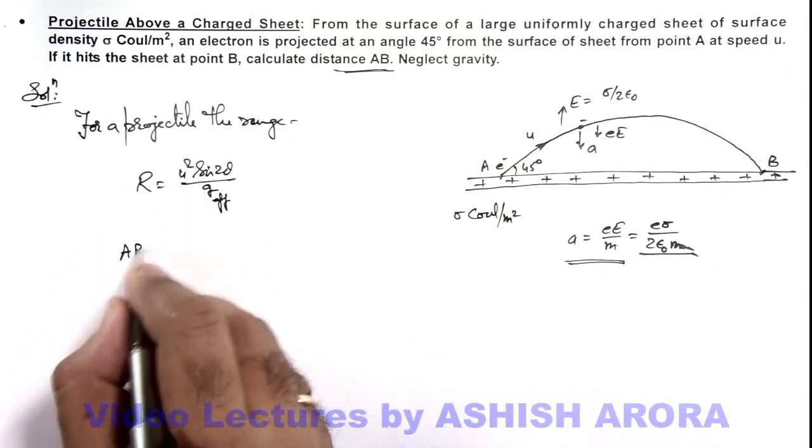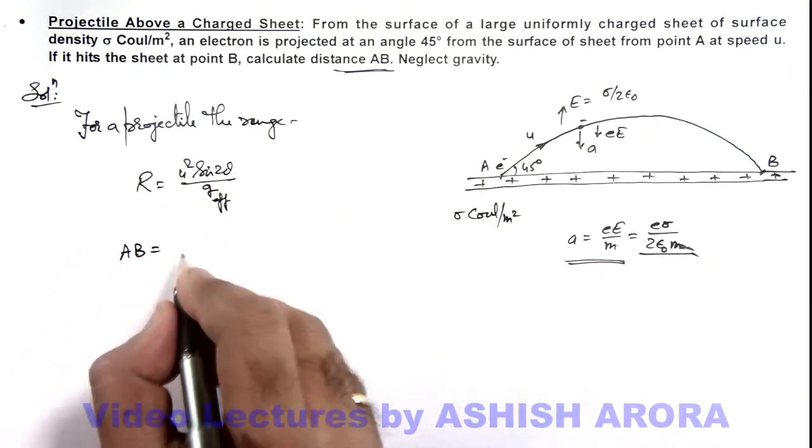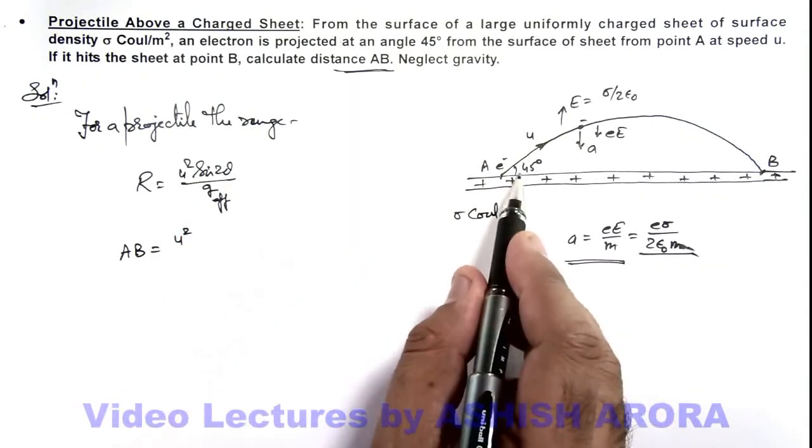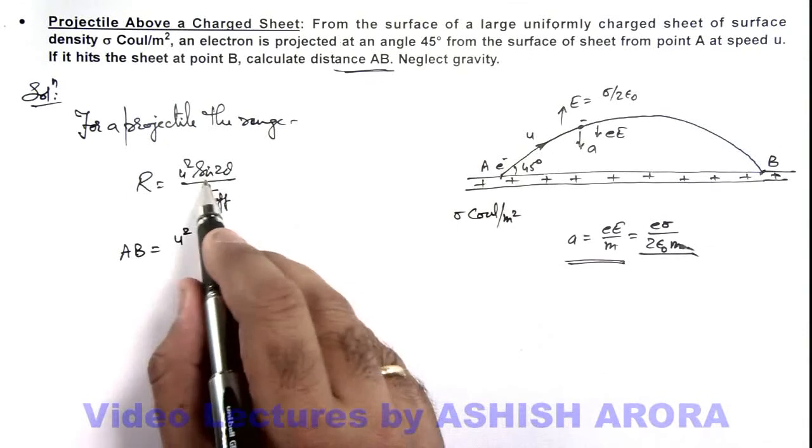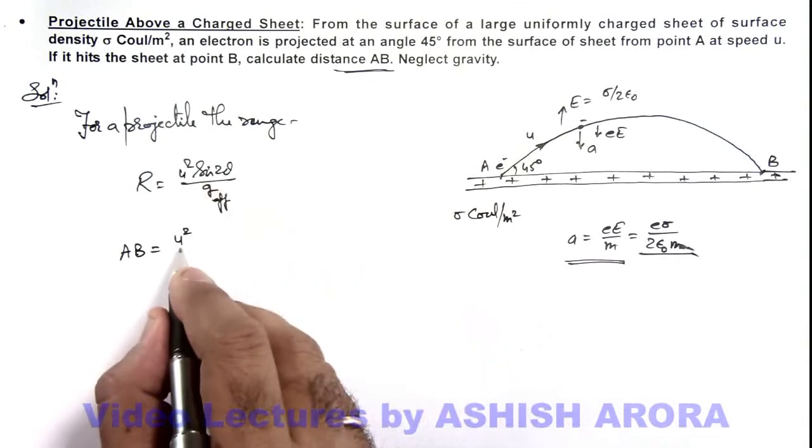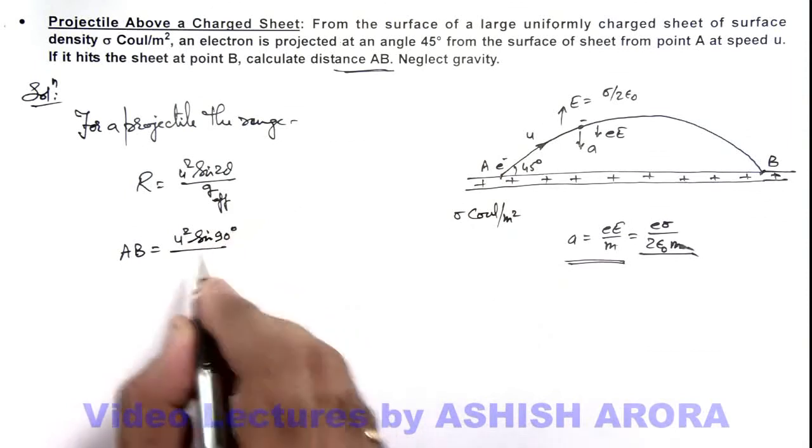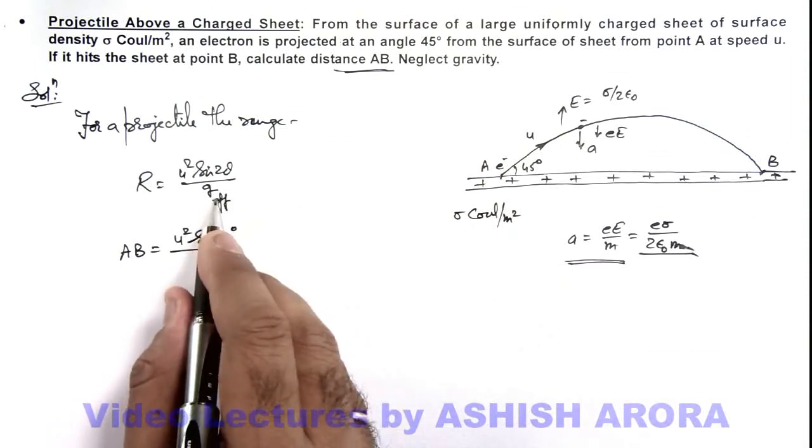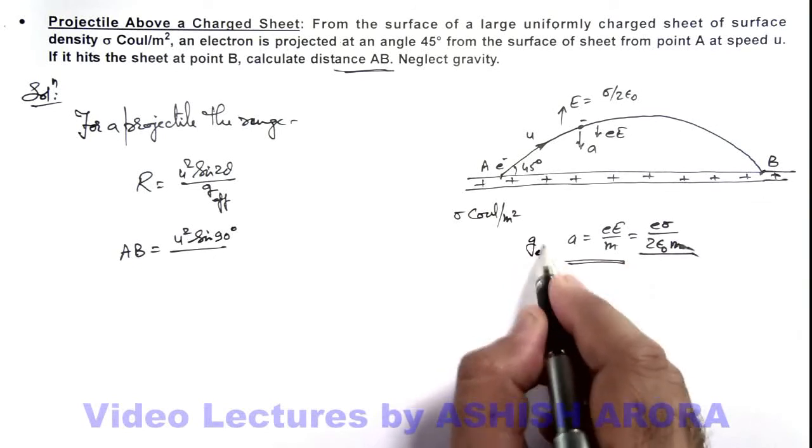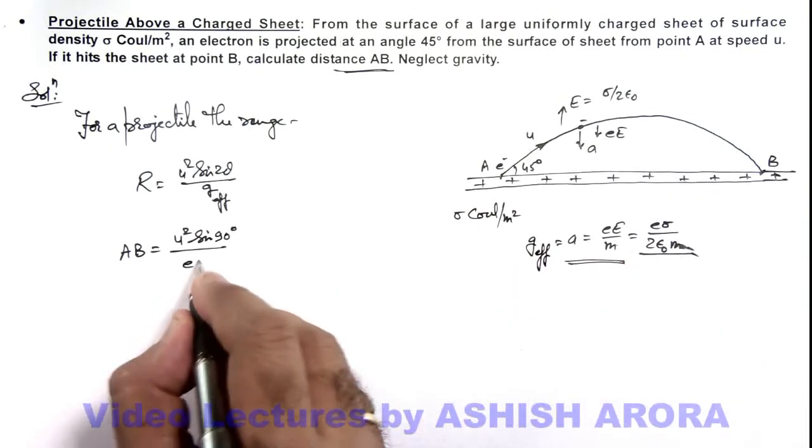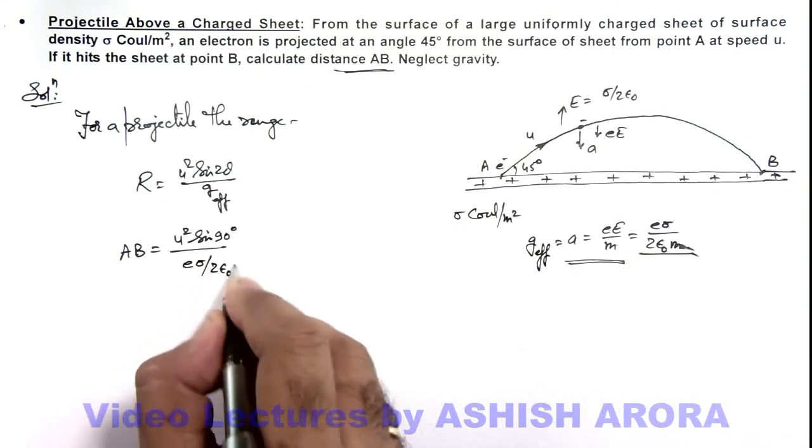So this range, the distance AB, we can write as u² sin(2θ). As theta is 45 degrees, this can be taken as 1 (sin 90 degrees), divided by this effective gravity, which is the acceleration. Here we can write this acceleration as effective gravity, so eσ/2ε₀m.